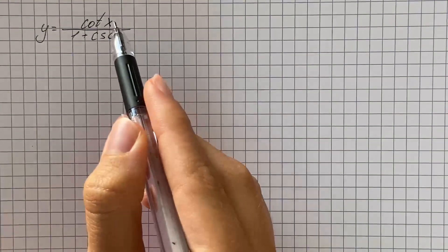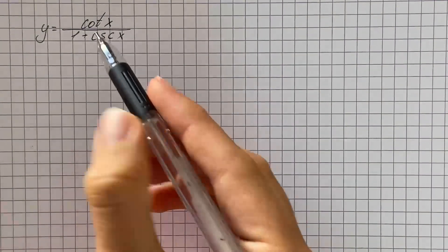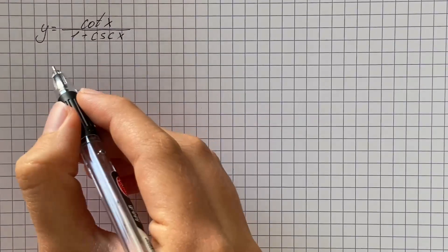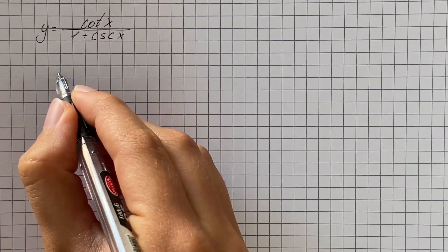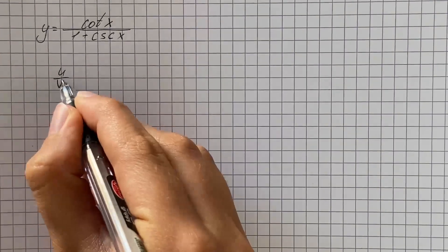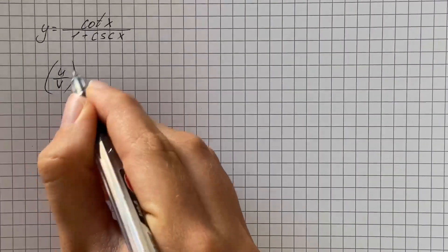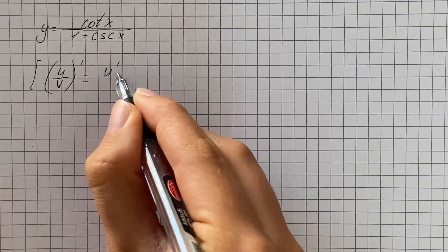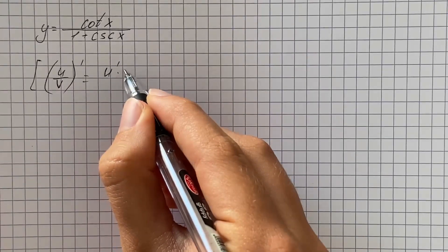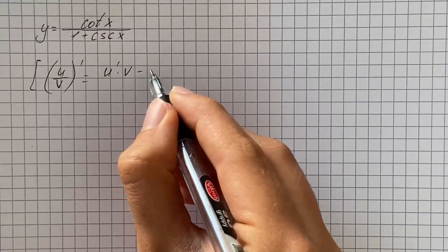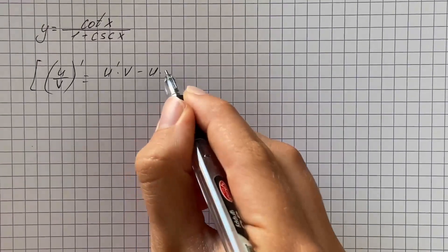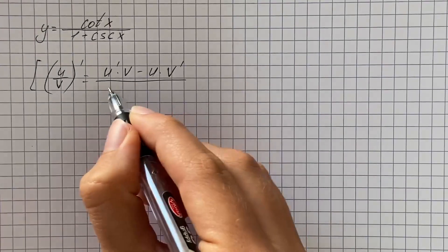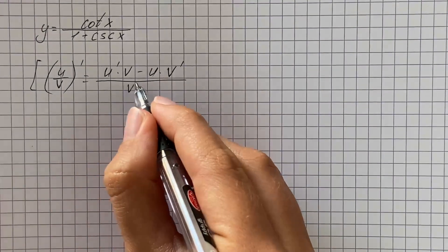We have to find the derivative of the given function, and here we're going to use the quotient rule, which we use when we divide one function by another. That's going to look like: derivative of u over v equals derivative of the numerator times the denominator, minus the numerator times derivative of the denominator, all over the denominator squared.